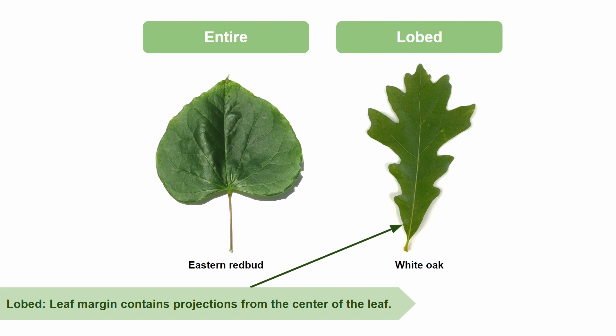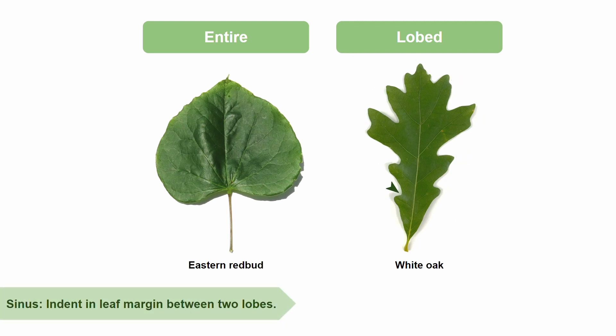Now let's dig a little deeper into lobed leaves and talk about lobes and sinuses. We already know that a lobe is a projection that extends from the center of a leaf, and if we take a look at our white oak leaf, we'll see that it has nine lobes. Sinuses, on the other hand, are the indents in the margin between two lobes. On our white oak leaf, there are eight sinuses.